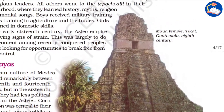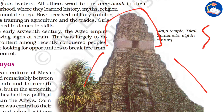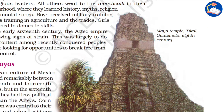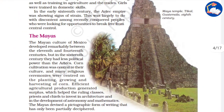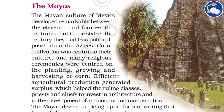The Mayas had a remarkable temple in Tikal, Guatemala — an 8th-century structure like a pyramid with a structure on top where sacrifices were held. Maya culture of Mexico developed remarkably between the 11th and 14th centuries, but by the 16th century they had less political power than the Aztecs.